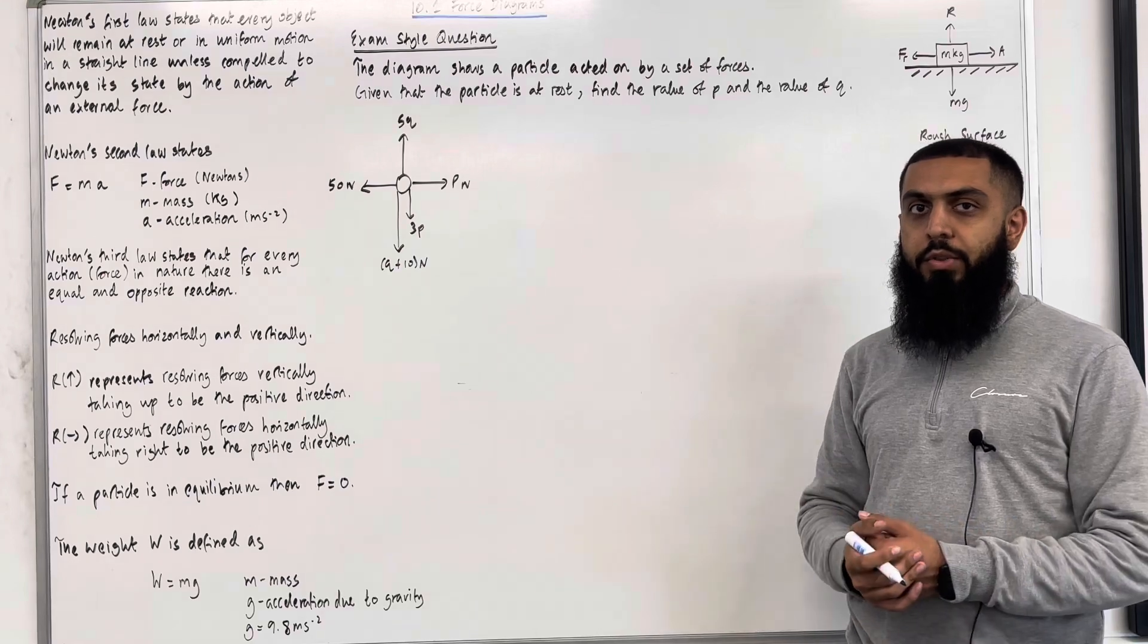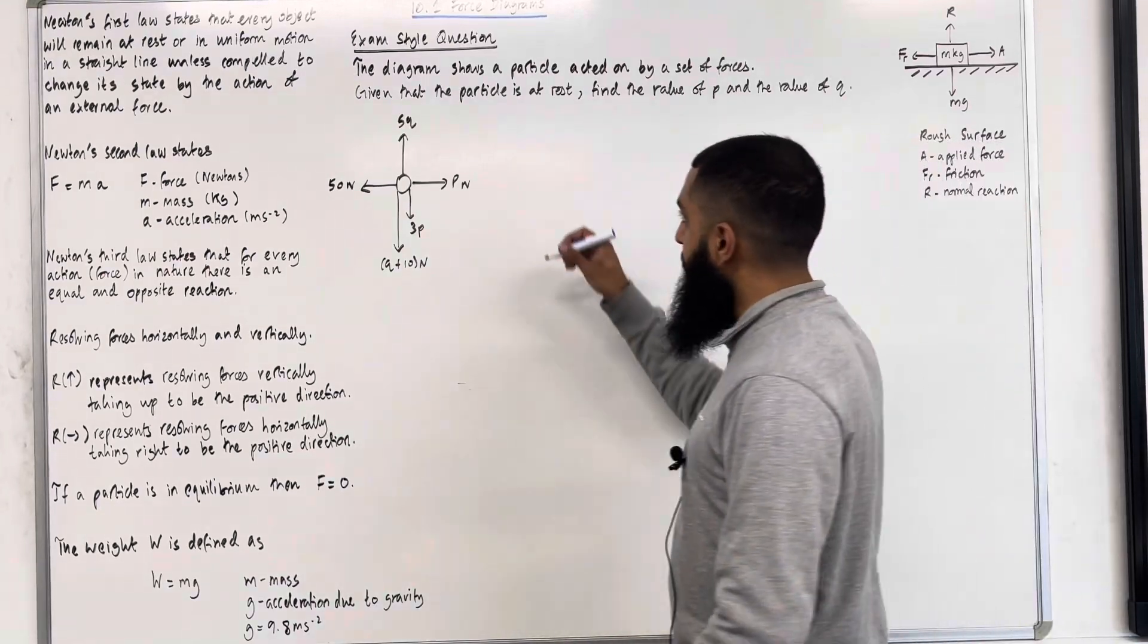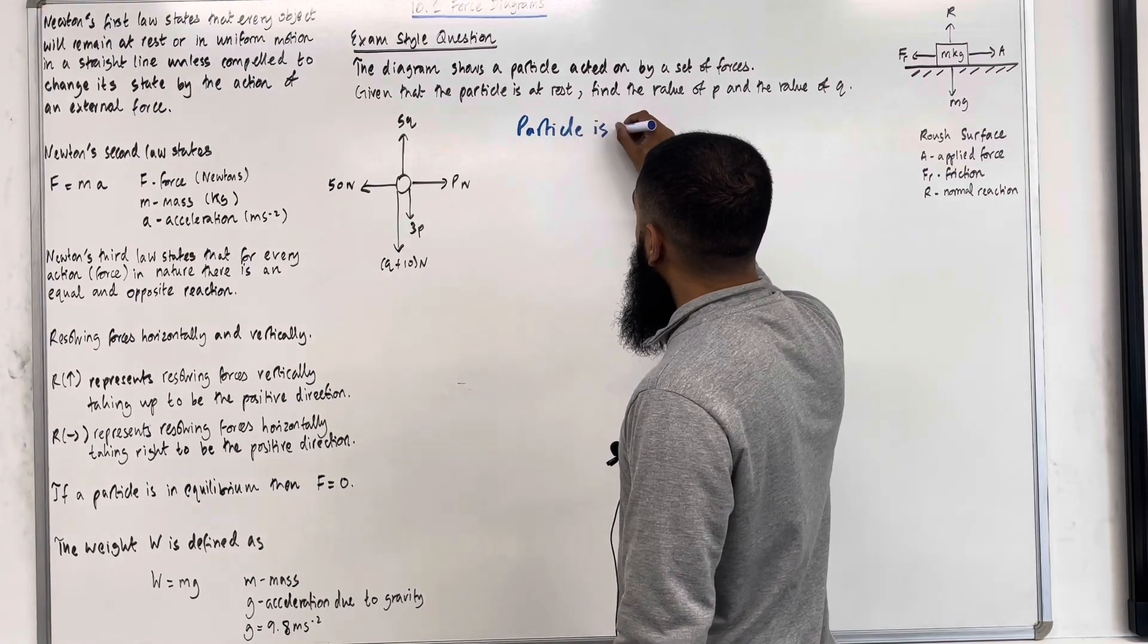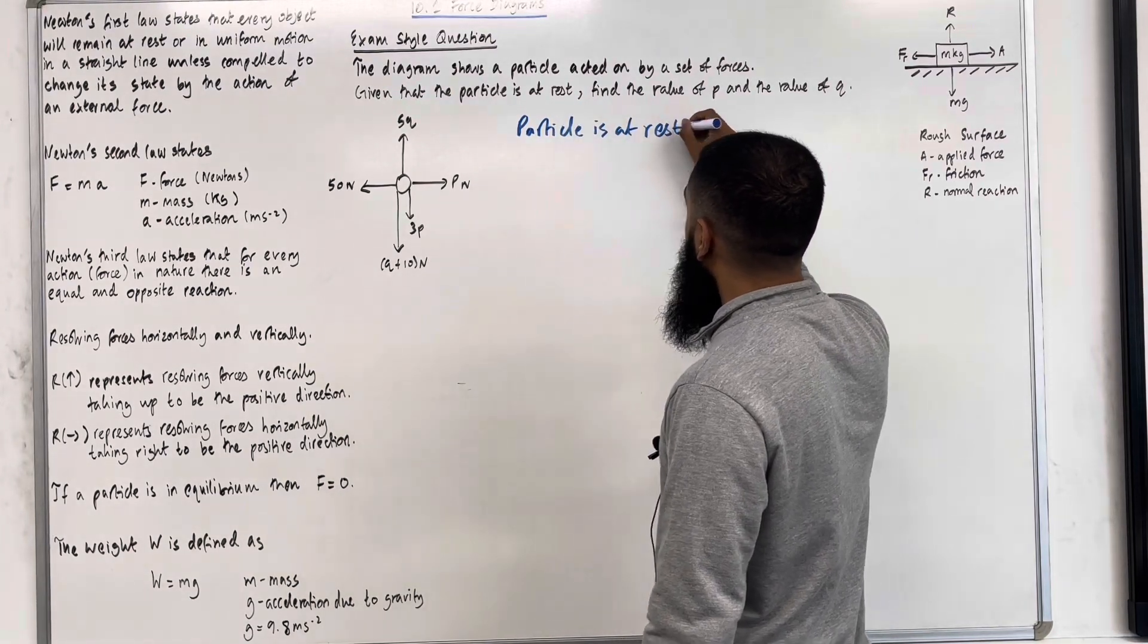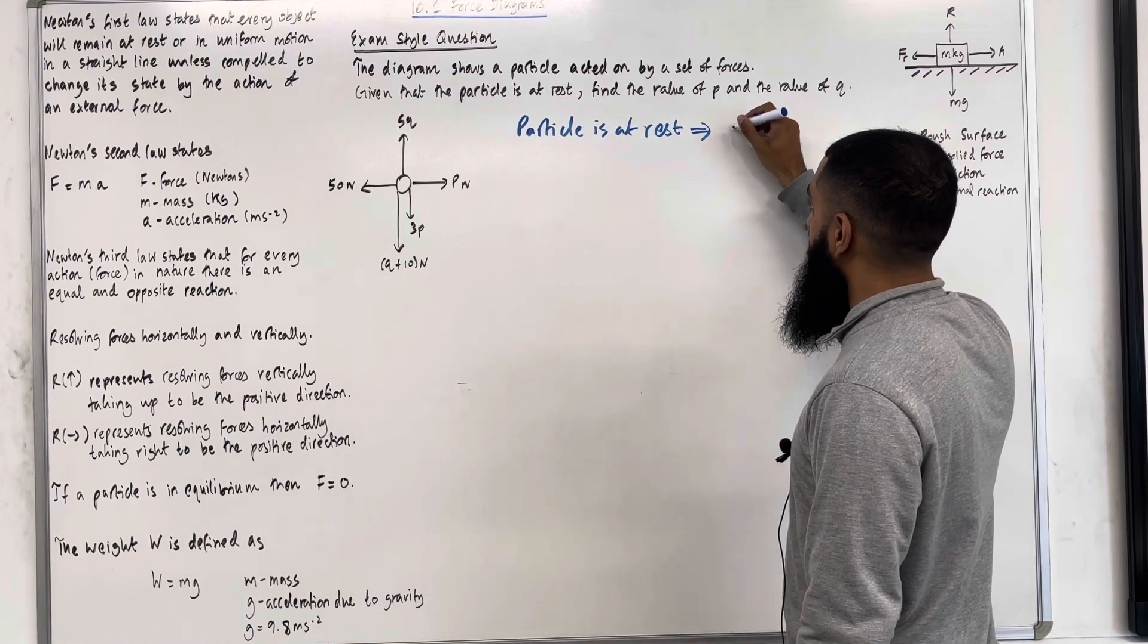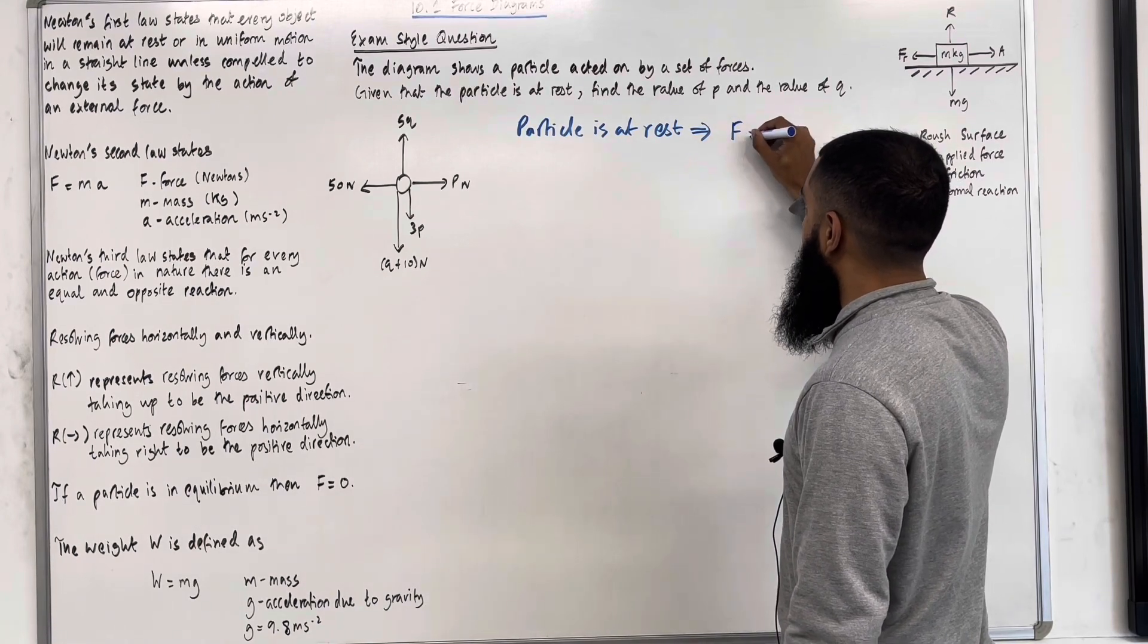Firstly, we know that the particle is at rest. So I can write down particle is at rest. This implies that the resultant force horizontally or vertically is equal to zero. So I can write F equals zero.